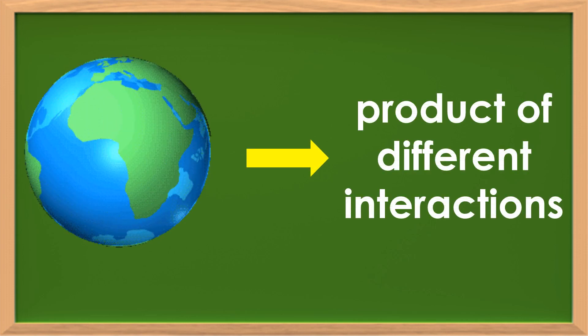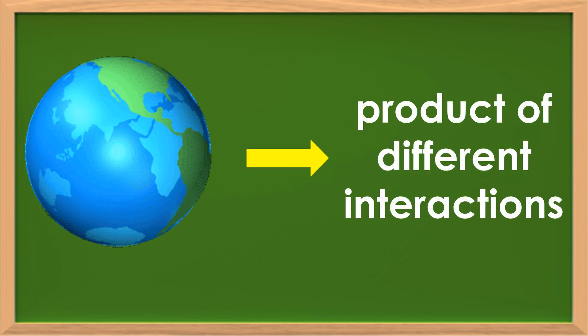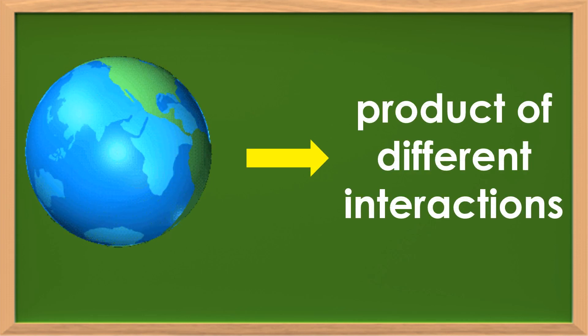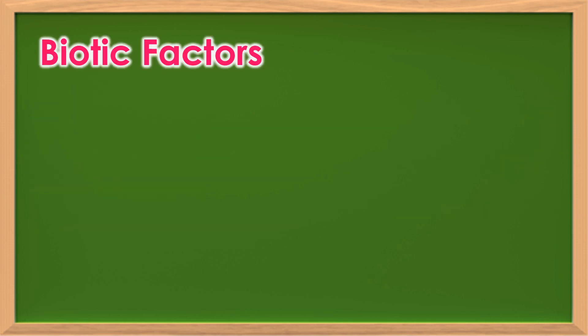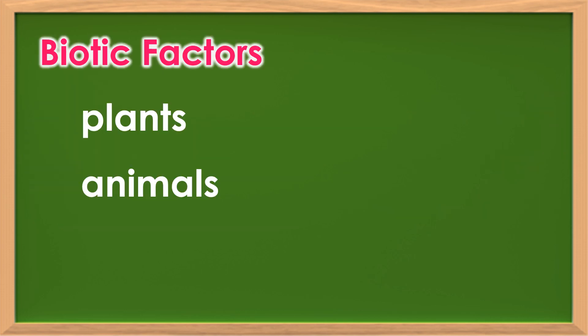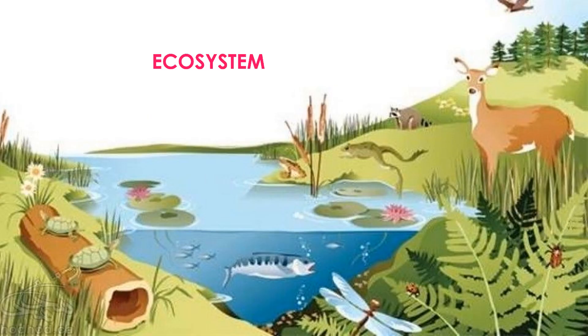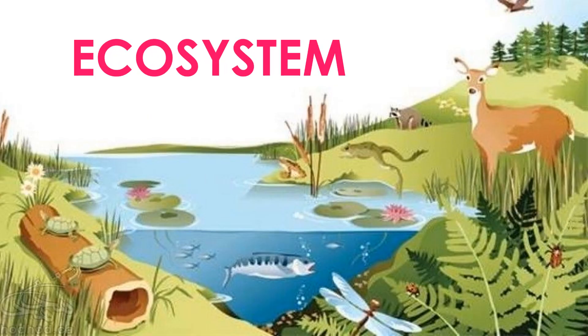Life on Earth is a product of different interactions in a region or geographic area, where both biotic factors such as plants, animals, and other organisms, and abiotic factors like weather and landscape work together. This area is called an ecosystem.